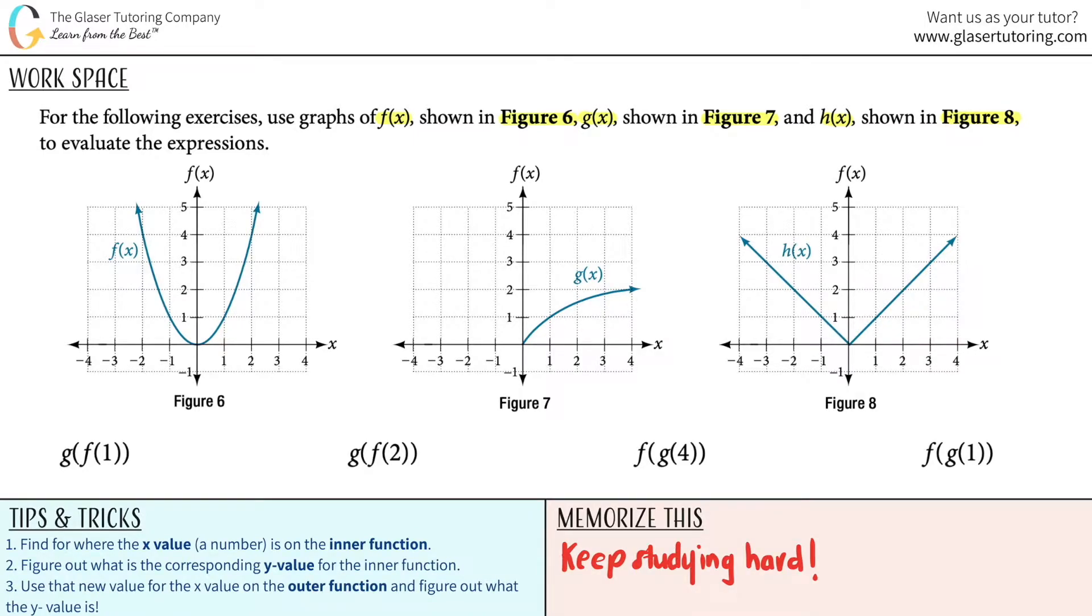Okay, there are four expressions here, these guys at the bottom. We got to get down to the answer to these by using these graphs. First little tip here: f(x) is just a fancy way of saying y. So normally we know that the vertical line is the y-axis, right? So I'm just going to say that this is the same as saying y. Now in order to evaluate the expressions, we got tips and tricks down here to help you guys. It's super simple. The first thing that we're going to do with these composite functions is we need to find out where the x value, which is going to be the number, is on the inner function of the graph.